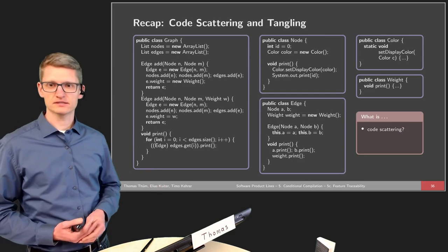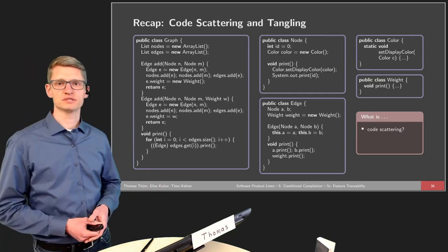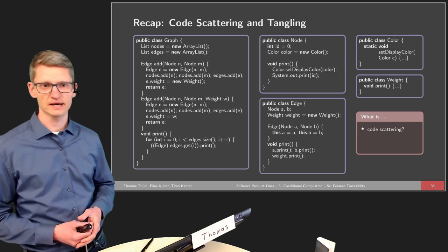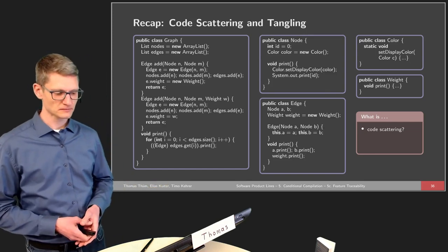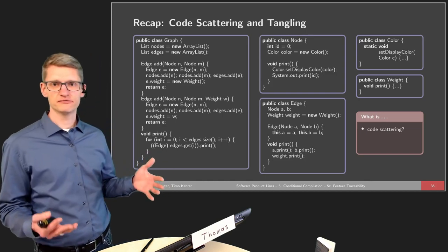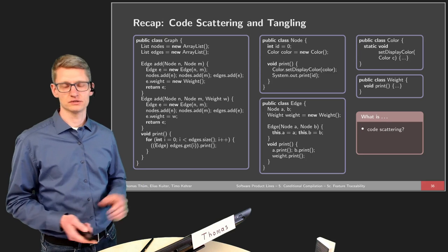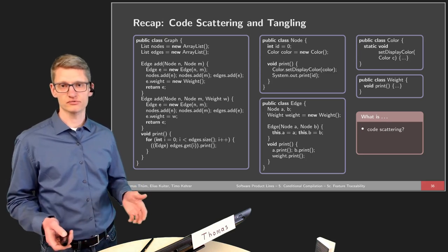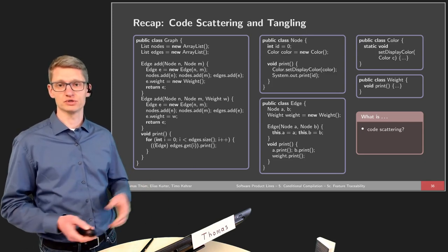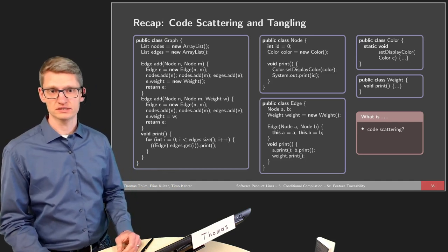Recap. We have had our graph implementation, some source code for the graph implementation, and we've defined some terms — scattering and tangling. What was scattering? Scattering means that we have split the feature among many different parts of the source code. This is obviously a problem: if I want to edit that feature, remove it, or extend it, then I need to identify all those locations where it is scattered.